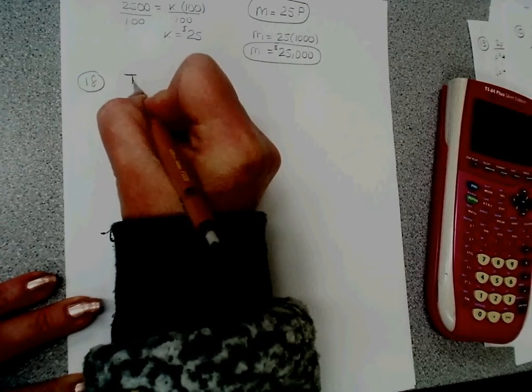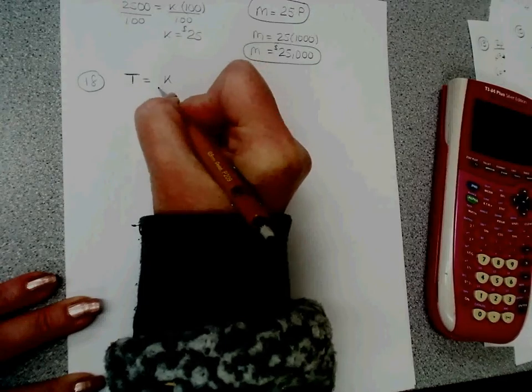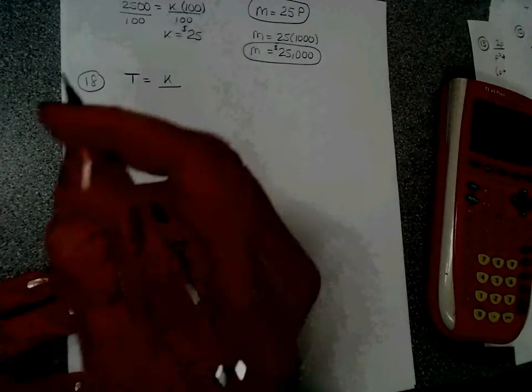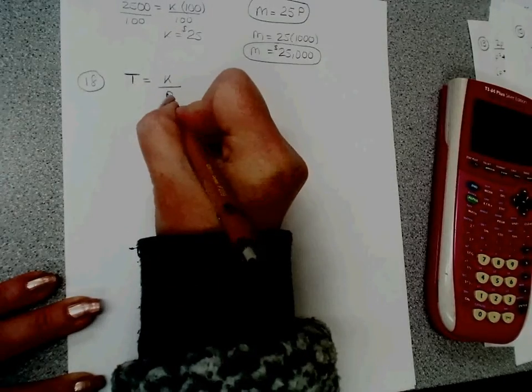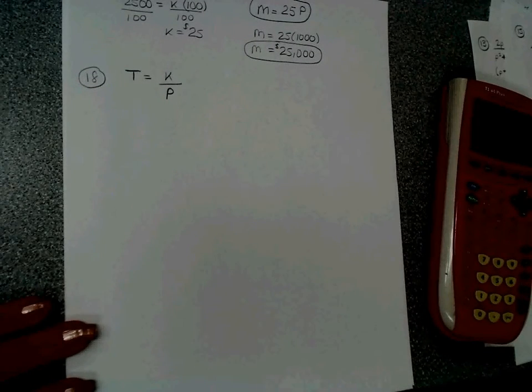So let's write that. The number of tickets that Caleb can buy is inversely proportional. That means k divided by the price of the tickets. So t equals k divided by p.